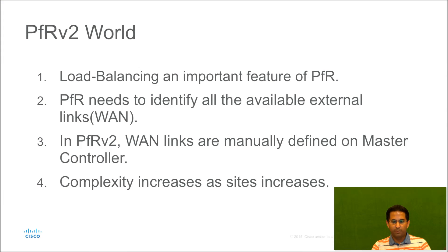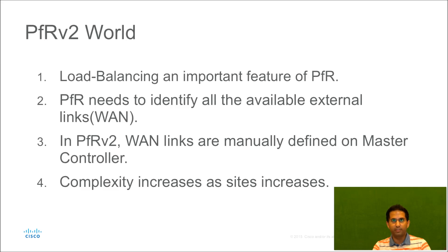One of the main applications of performance routing is WAN load balancing. To achieve this, PFR needs to identify all the available external links. In PFR version 2, a site's WAN links or the external interfaces are manually defined on every site's master controller router. This approach works fine if there are very few sites to be configured, but the complexity increases as the number of those sites increases, as this configuration will then be required to be manually done on each site. Even managing every site configuration in time becomes difficult.